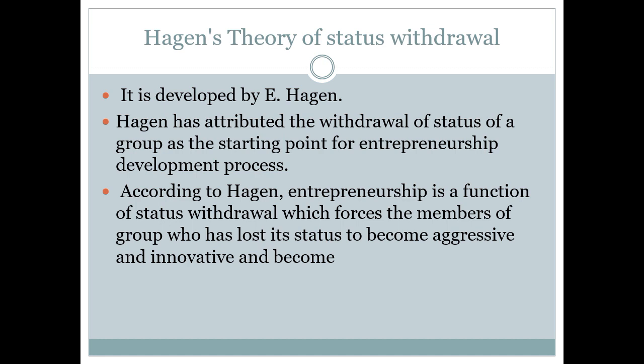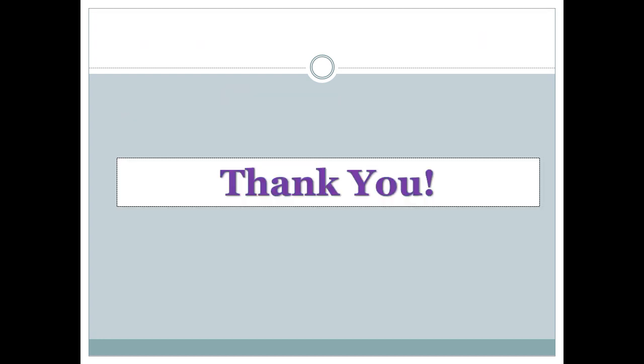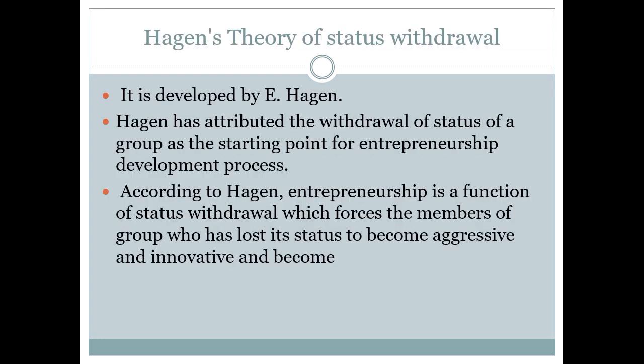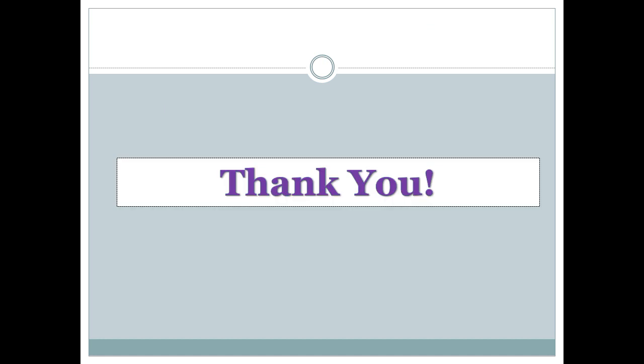Hagen suggests that if your status is withdrawn and you are a strong community or group, the group establishes an enterprise. After establishing the enterprise, they innovate something, create certain products, goods or services through which they prove their distinctiveness, introduce certain distinct practices, and indirectly force others to follow them. This is the theory of status withdrawal. Hope you have understood these two theories in today's lecture. Thank you.